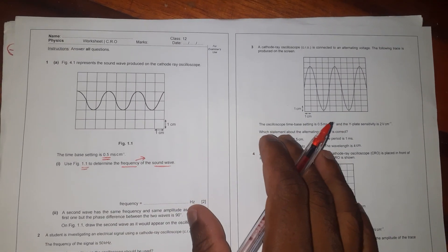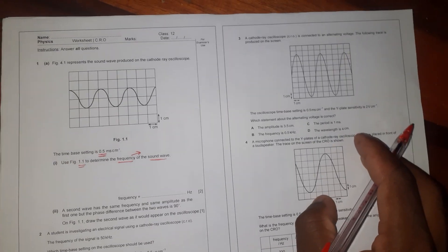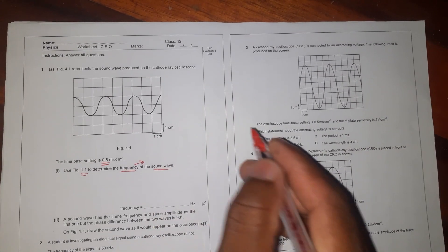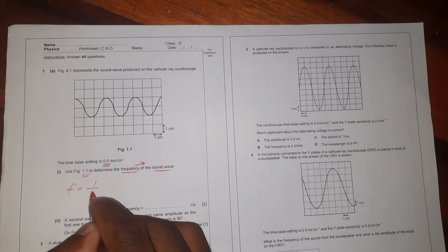So we can use the formula: frequency equals 1 over period.